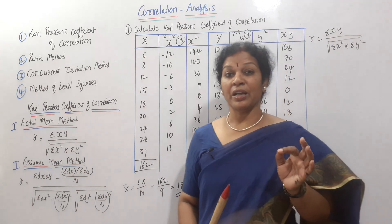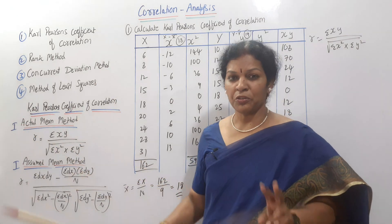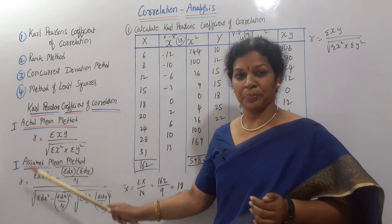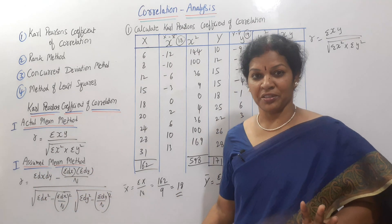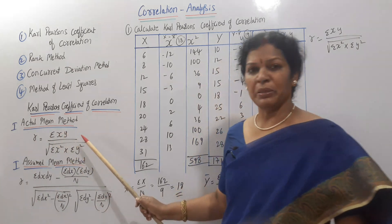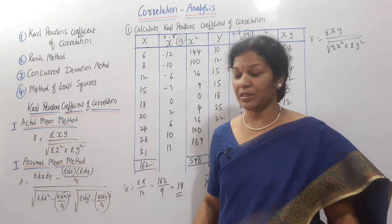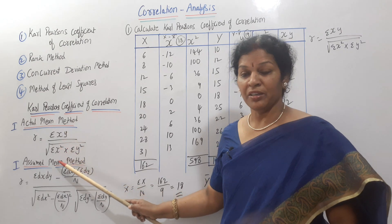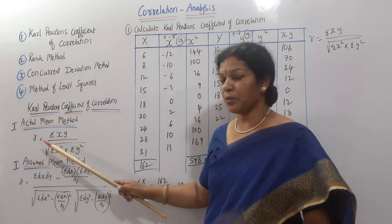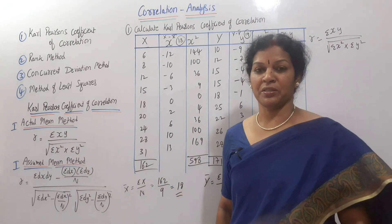Now let's look at Carl Pearson's Coefficient of Correlation. There are two methods: the Actual Mean method and the Assumed Mean method. The formula for the actual mean method is: r is equal to sigma xy divided by the square root of sigma x squared into sigma y squared.